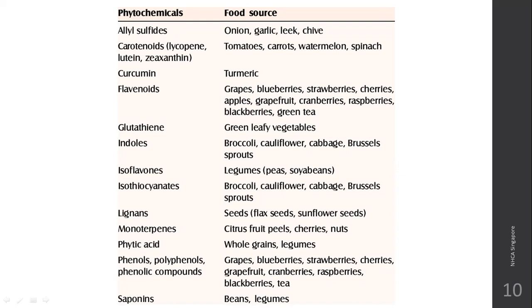Phytic acid is found in whole grains and legumes. Phenols and polyphenols are found in tea and berries. Saponins are found in beans and legumes. So the names on the left are different forms of phytochemicals, and their best sources are given on the right side. Phytochemicals are good for human consumption and also have antioxidant properties.